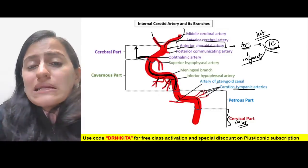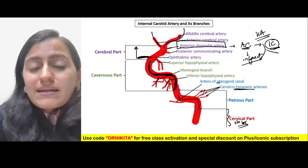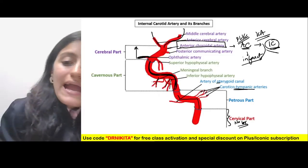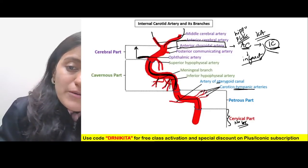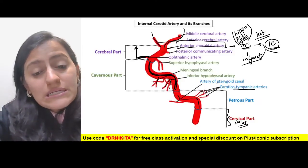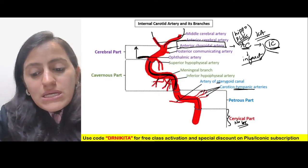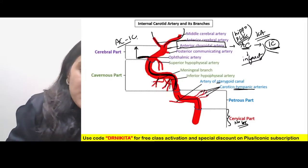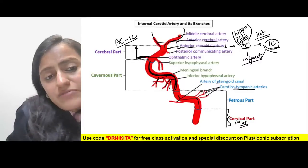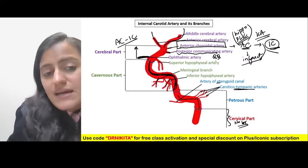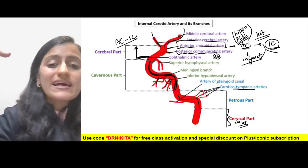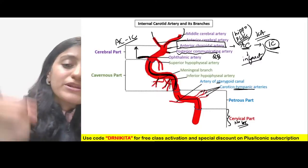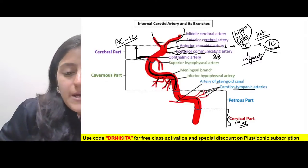The anterior choroidal artery (ACA branch of IC) — if there is an infarct in its territory, the posterior limb of the internal capsule and the medial temporal lobe/hippocampus will be affected. Remember: AC is a branch of IC. ICA also gives the posterior communicating artery, which connects the anterior and posterior circulation — joining ICA with PCA.